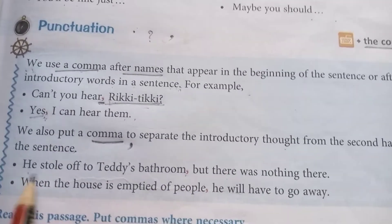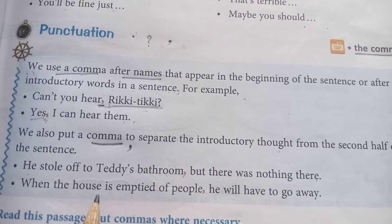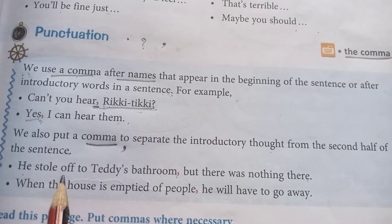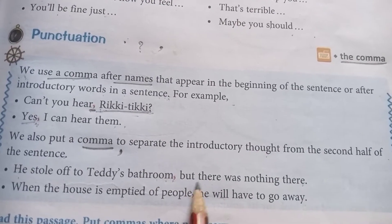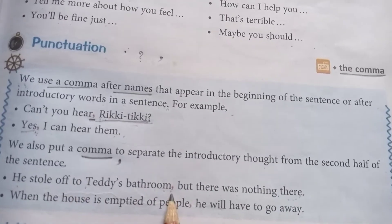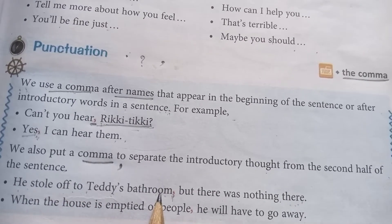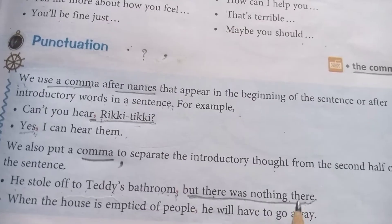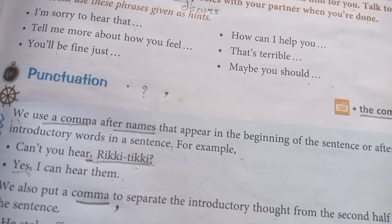See the example: 'He stole off to Teddy's bathroom, but there was nothing there.' Here the first sentence is 'He stole off to Teddy's bathroom,' and 'but there was nothing there' is the second sentence. The second sentence depends on the first, so in between we have to give the comma. 'He stole off to Teddy's bathroom, comma, but there was nothing there.' That sentence shows it is the second part, and this sentence depends on the first, so we should have to put a comma here.